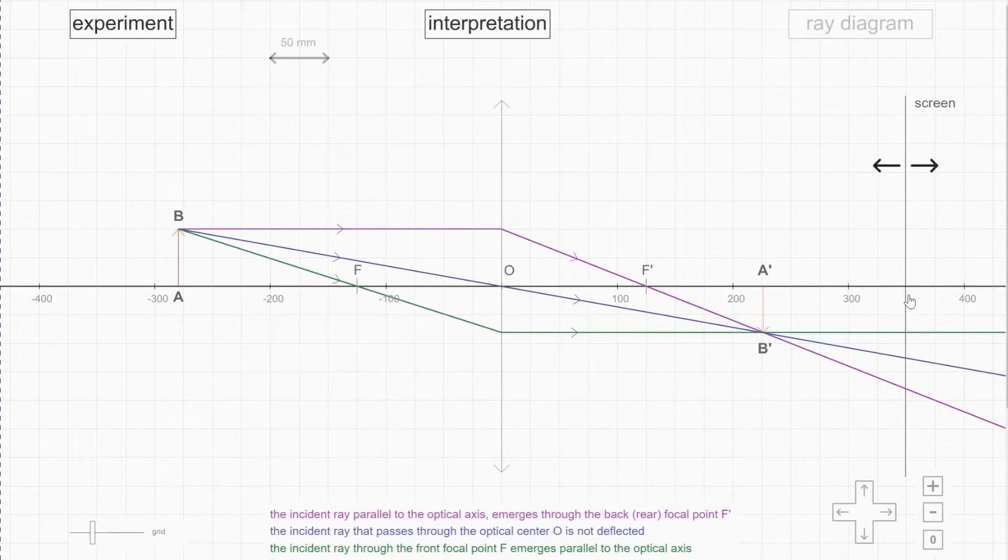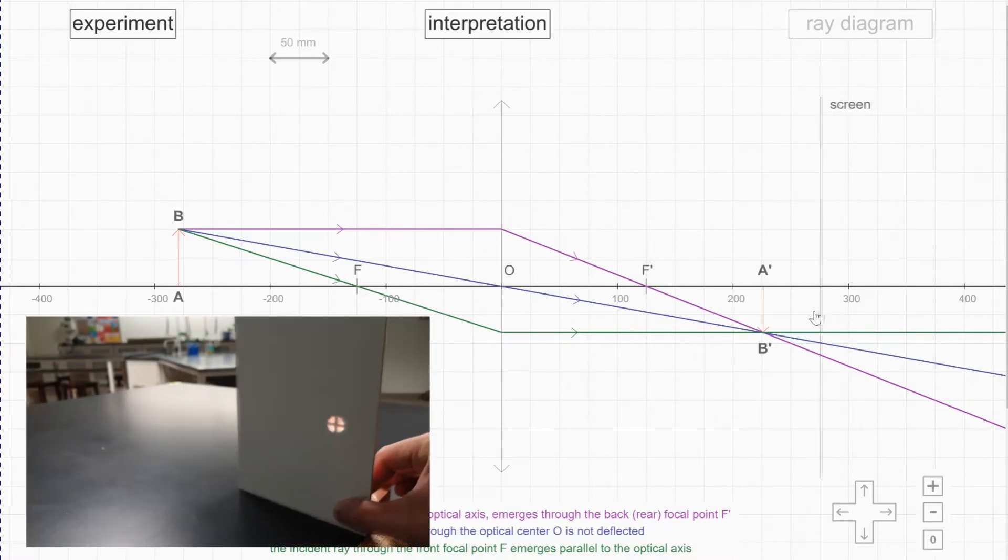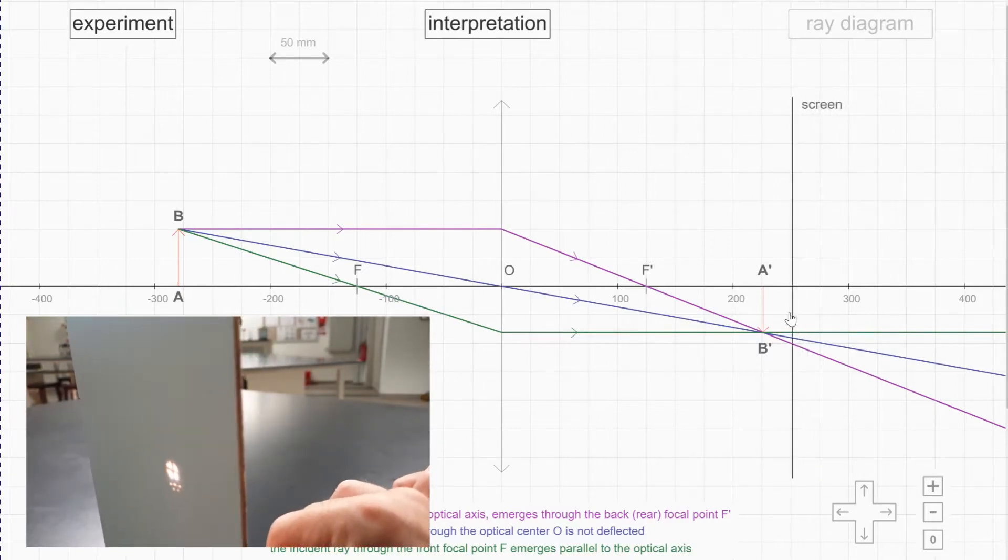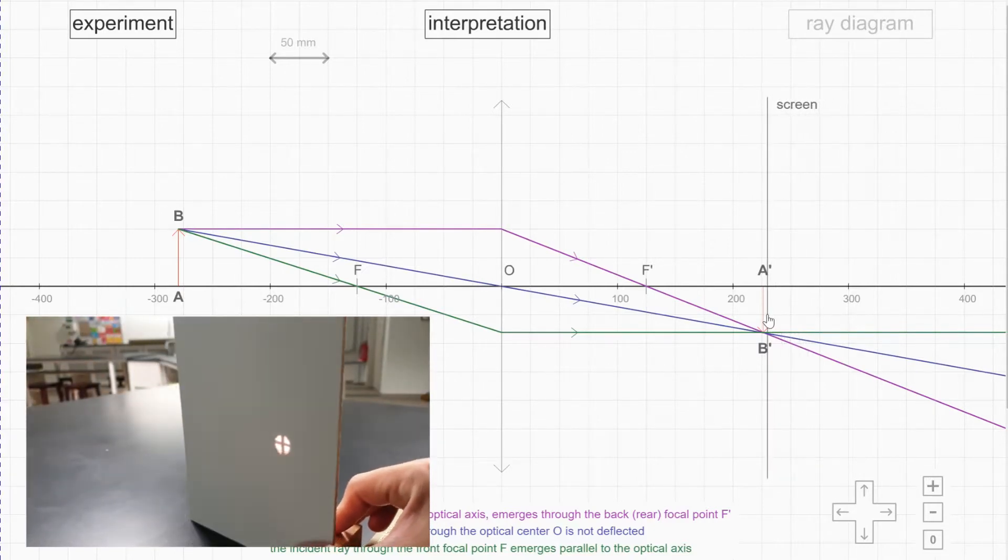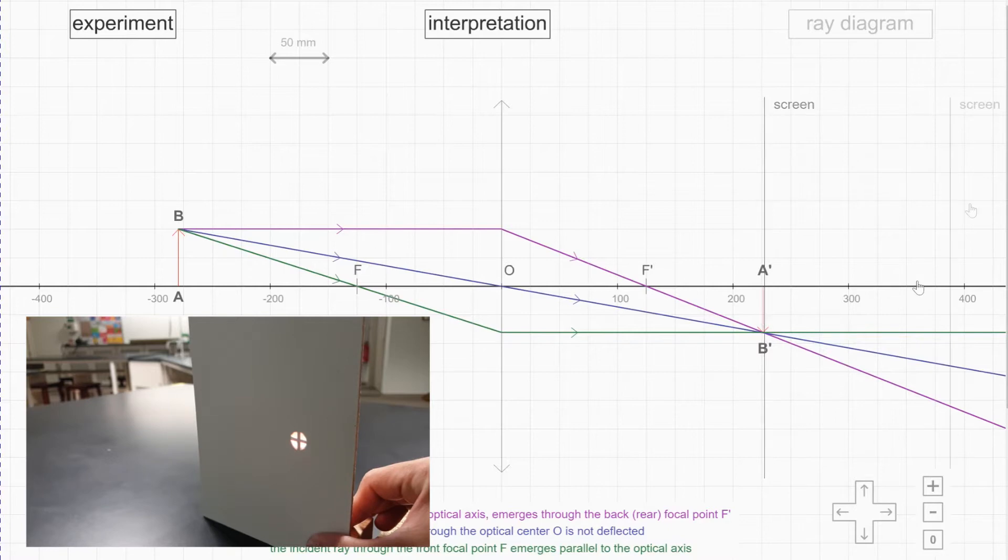You can imagine there are multiple images of the tip of the image here, here and here, but they are not aligned. That's why you have a blur image. So if I were to shift the screen nearer, somehow it's getting sharper and until here. If your screen is exactly at this point here...